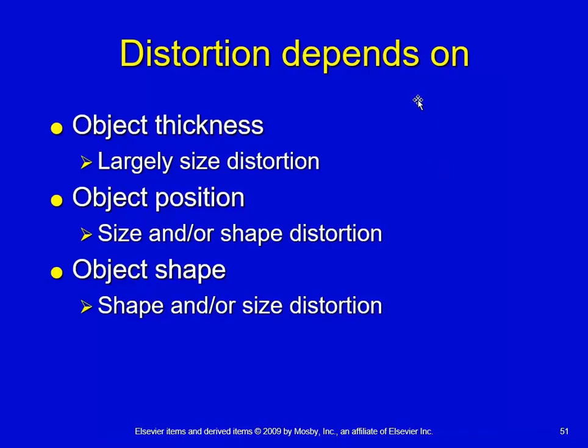The amount of distortion depends on the thickness of the object. The immediate thing you would think of regarding object thickness is size distortion or magnification. But with an increase in OID, you have an increased likelihood that you could introduce some misalignment of the anatomy with the image receptor, and therefore have some foreshortening as well.